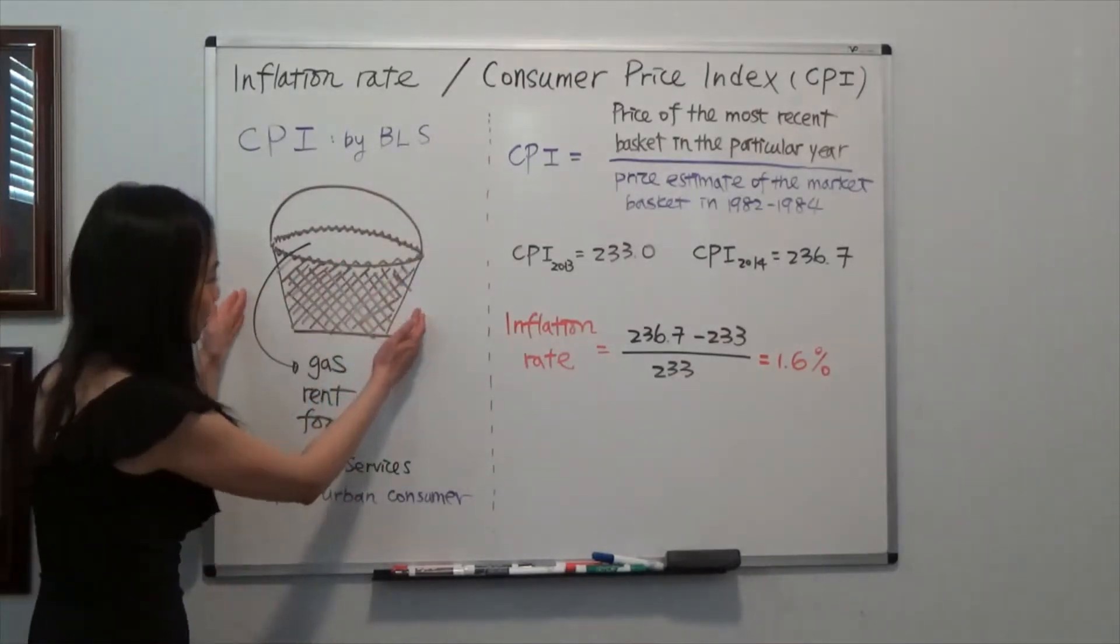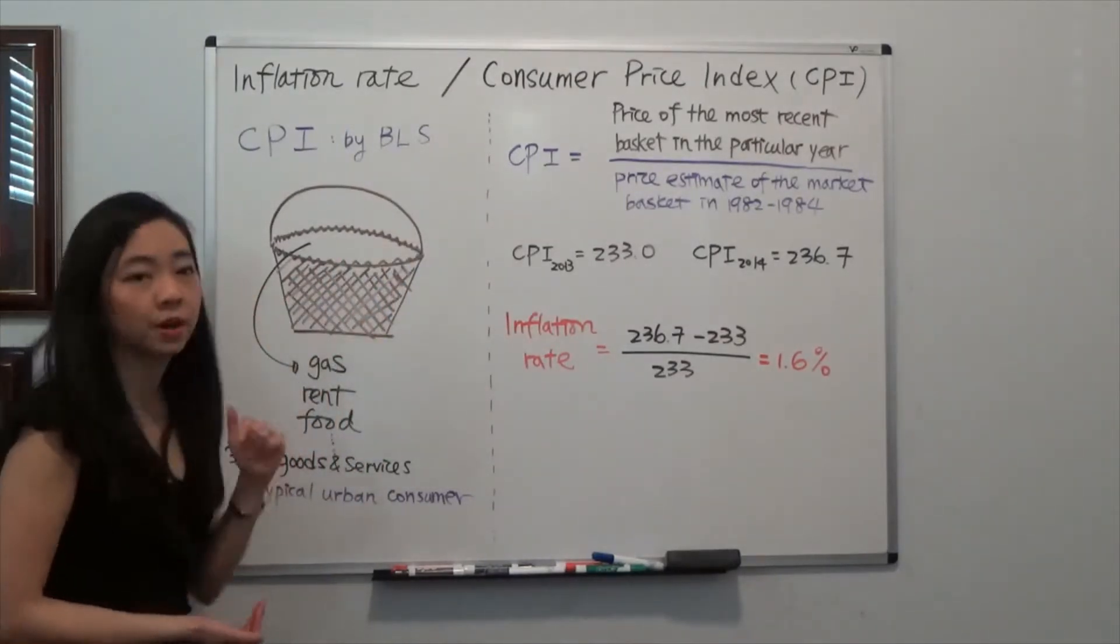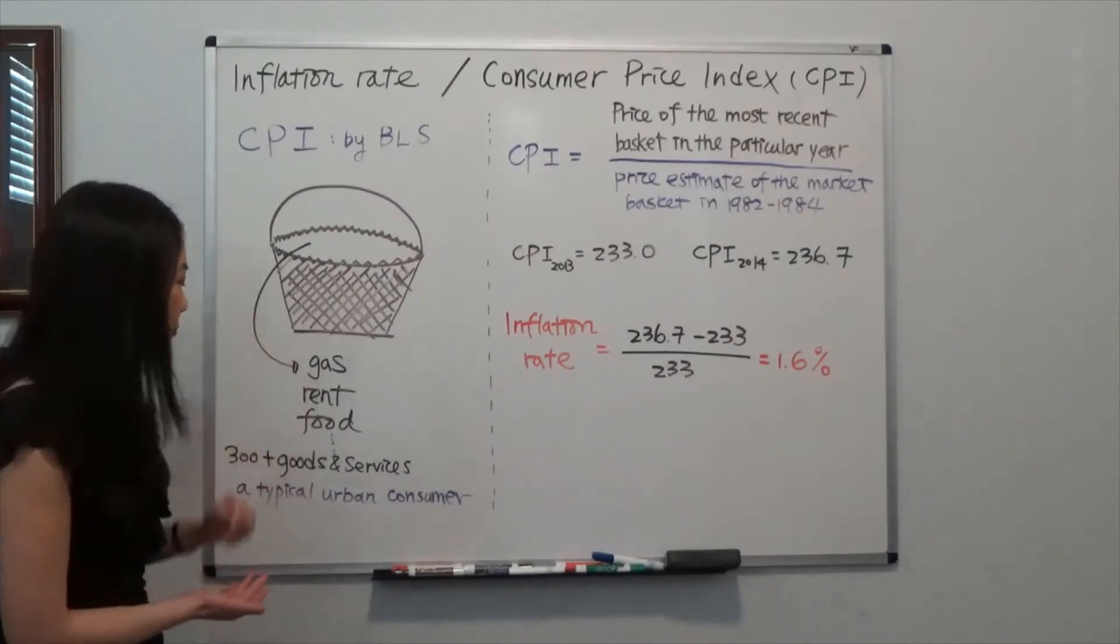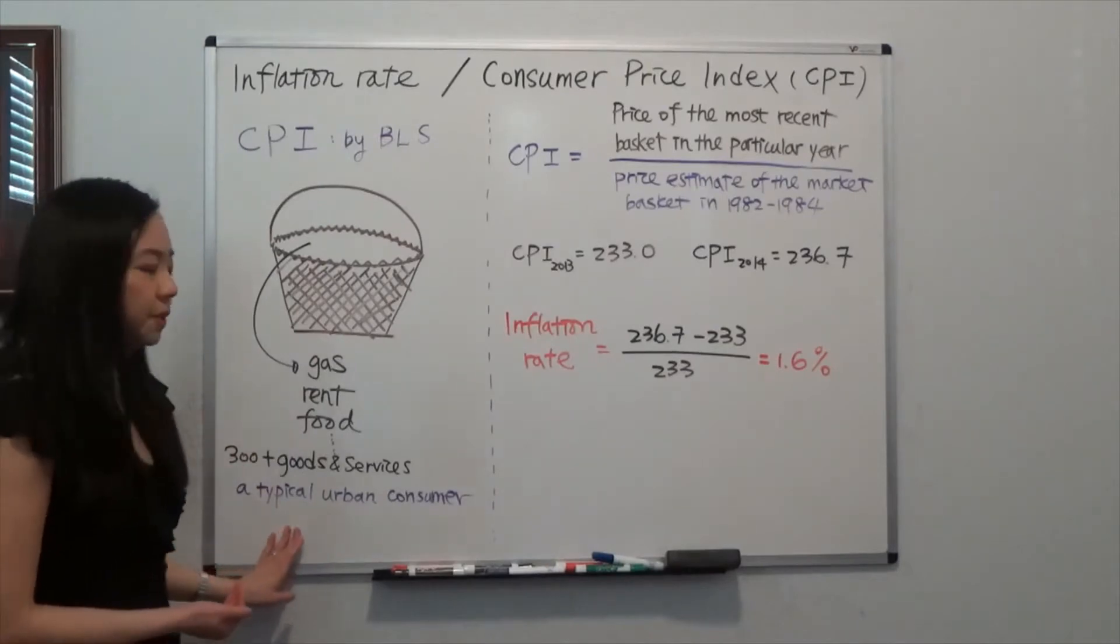In this basket, we have 300 plus goods and services, including gas, rent, food, and so on and so forth, consumed by a typical urban consumer.